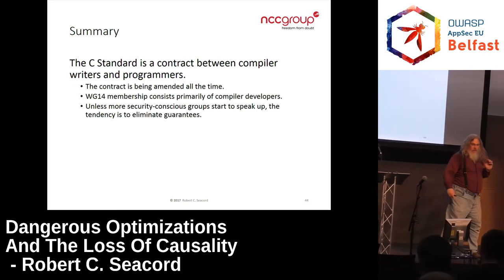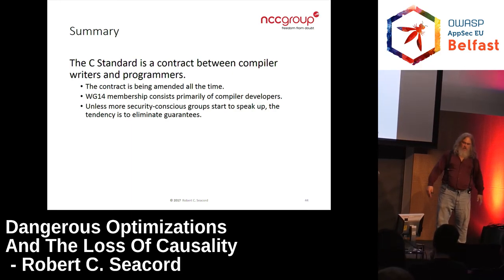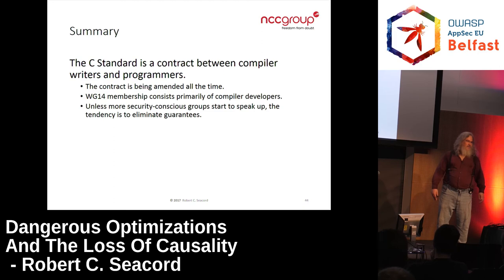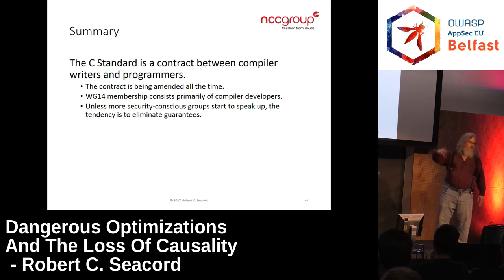Finally, tell your vendor to implement Annex L and use it — it's important. The C standard is a contract between compiler writers and programmers, but really only compiler writers show up to the committee — and me and the guy from Cisco. We've had votes that have been 30 to 2 where Cisco and I vote the same way and everyone else is against us. The contract is continually being amended, and unless more security-conscious groups get involved, the tendency is to eliminate guarantees from the standard. It's like getting divorced and telling your spouse to just handle the divorce and you'll be happy with whatever the outcome is — that's not going to work out good for you.